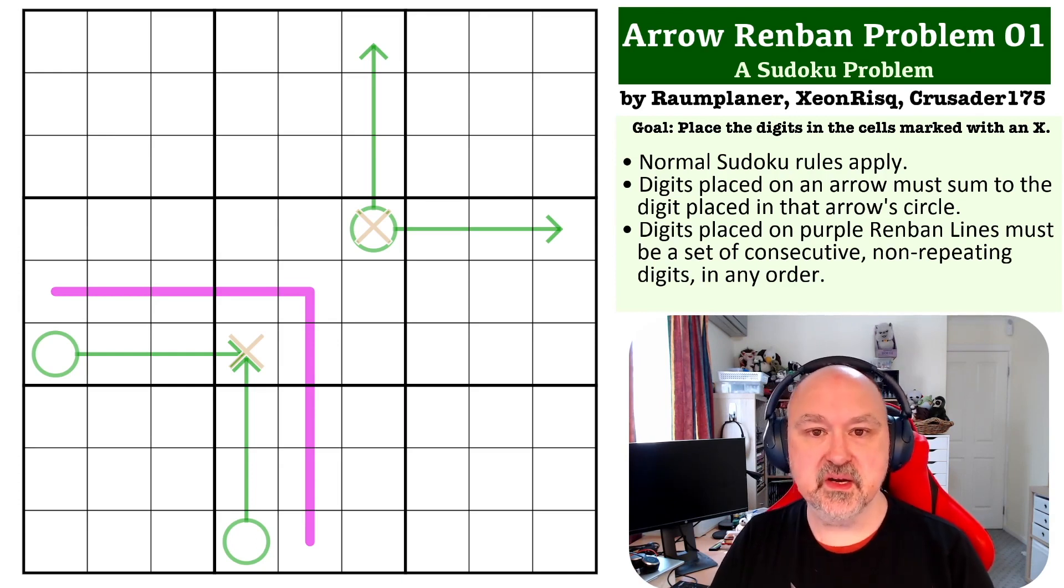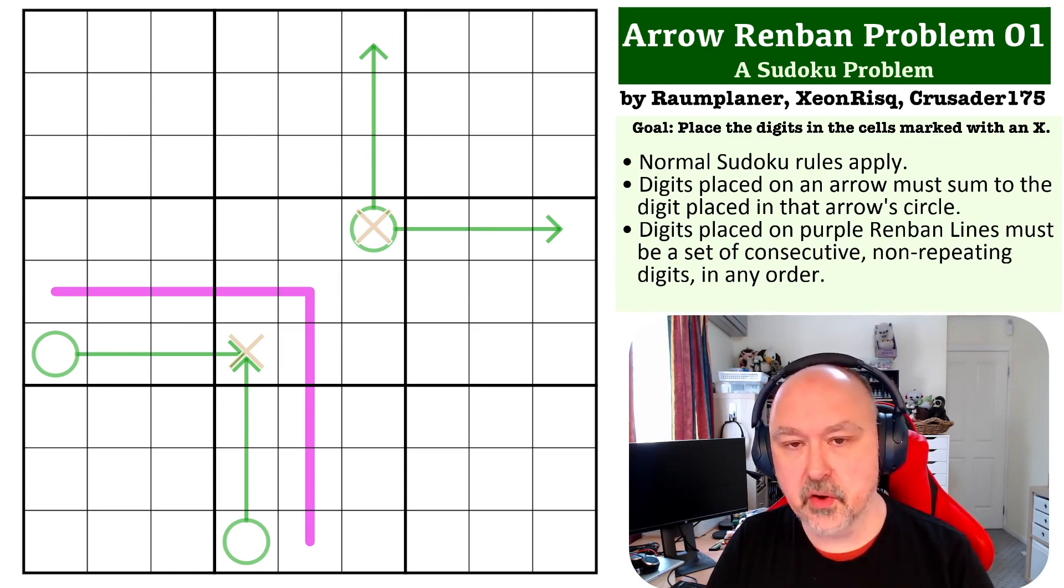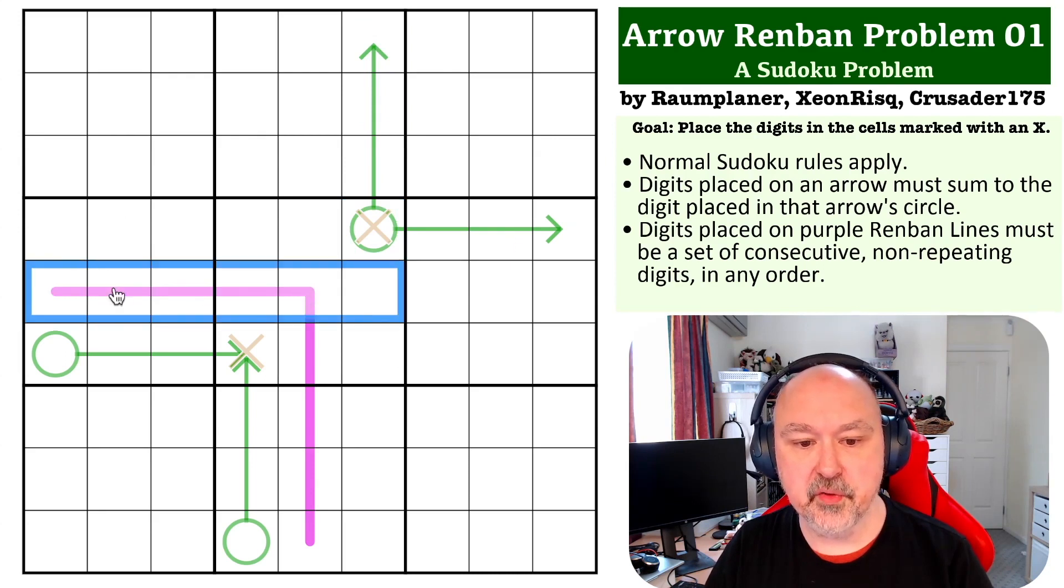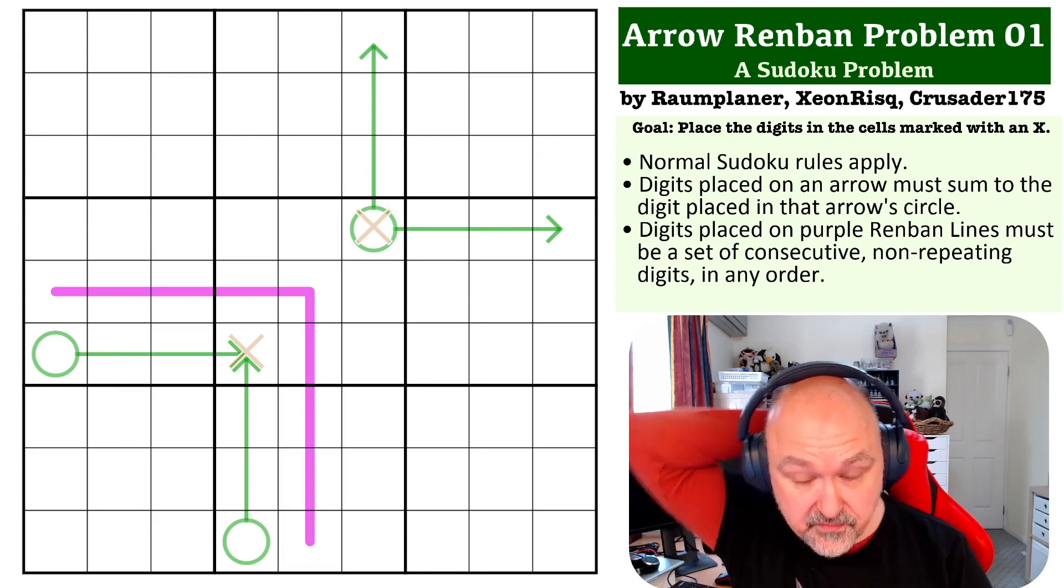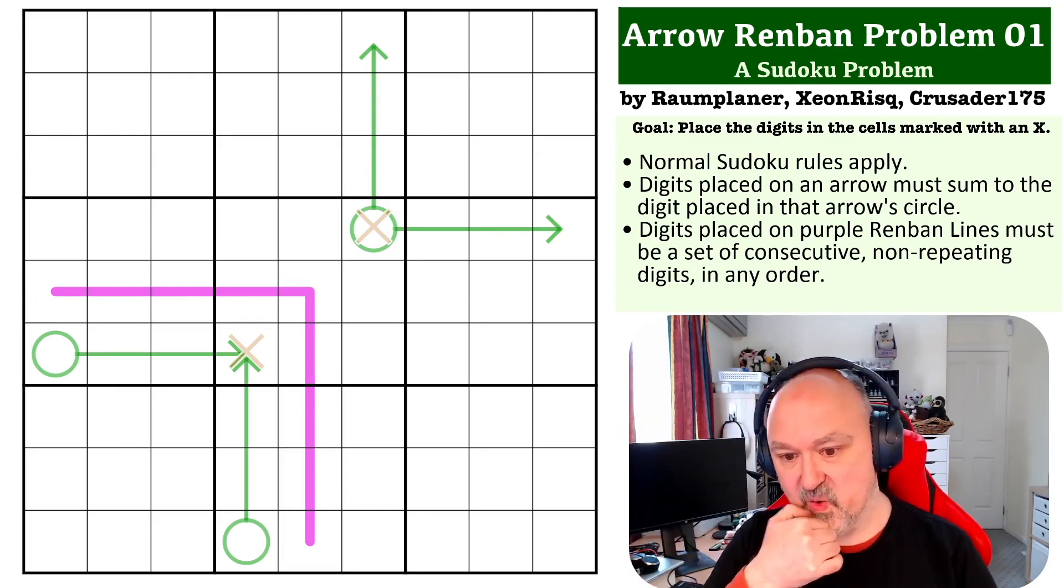So the rules in this one are fairly standard. We've got the normal Sudoku rules. You cannot repeat digits in rows, columns, or boxes. There are arrows, and the digits that are placed on arrows, the sum of them gets placed into the arrow circle. And the pink line, or the purple line, is a Renban line, and must contain a set of consecutive, non-repeating digits in any order.